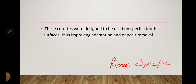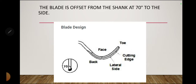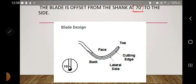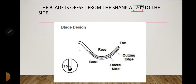Next is the blade design. The important part to remember is that the blade is offset from the shank at 70 degrees. The basic blade design has a face, a toe, a lateral side, and the shank is at 70 degrees to the side. The blade has a rounded toe and back, and the cross-section usually resembles a half circle.